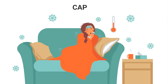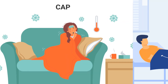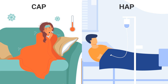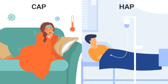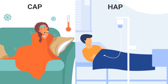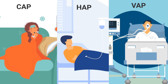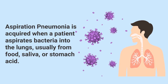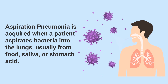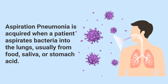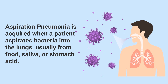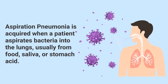Community-acquired pneumonia is when a patient gets it outside of the hospital. Hospital-acquired pneumonia, as the name suggests, is when a patient gets it during their hospital stay. Ventilator-associated pneumonia is when it's acquired while the patient is on the mechanical ventilator. Aspiration pneumonia is acquired when a patient aspirates bacteria into the lungs, usually from food, saliva, or stomach acid.